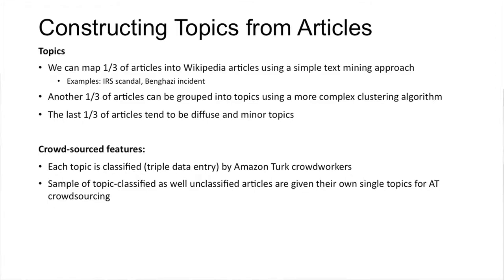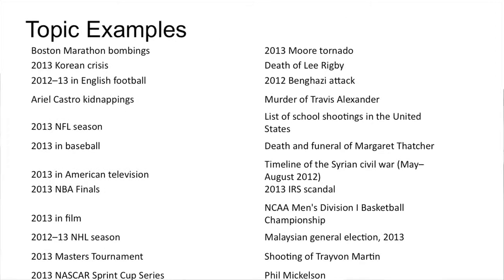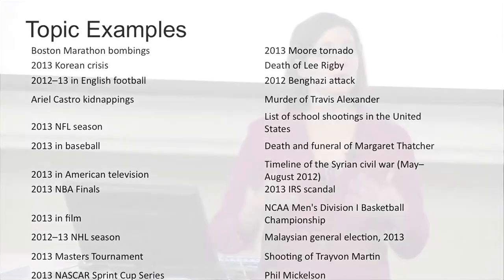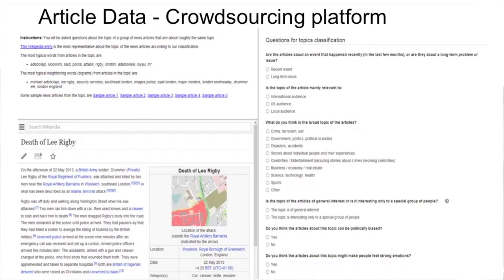The last third we can't classify very well — they're sort of diffuse minor local topics — so we crowdsourced them using Amazon. Here are just some examples of our topics from April of last year: Ariel Castro, murder of Travis Alexander, and so on. There are a few things that can be ambiguous — if you have a gay NFL player coming out, this is a sports article but it's also potentially politically biased. And some things that looked funny in our raw data actually turned out to be right.